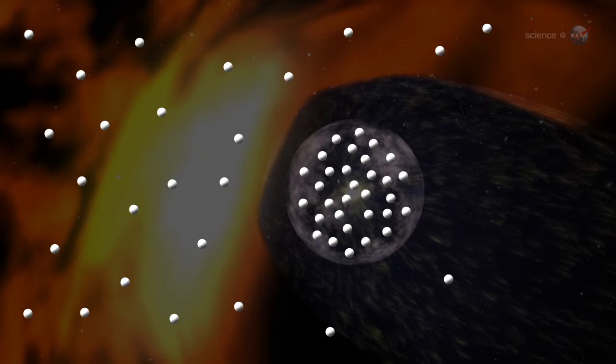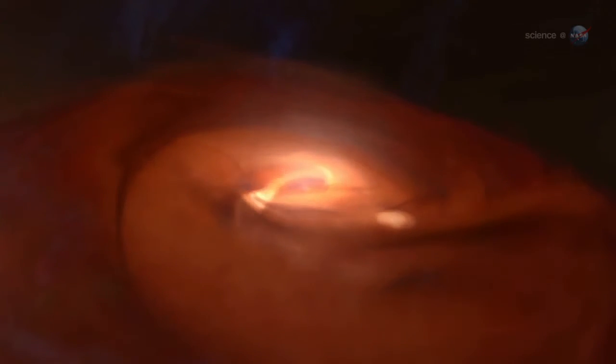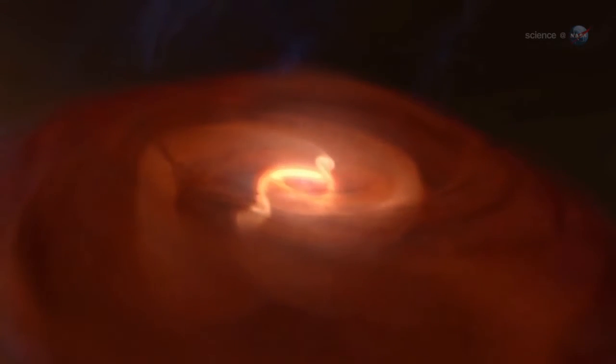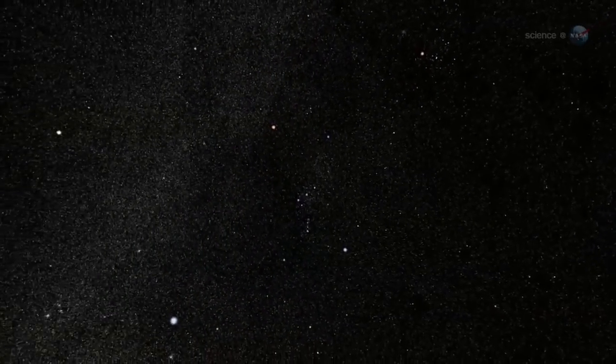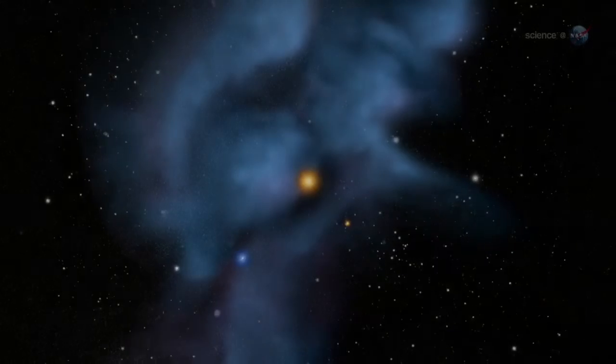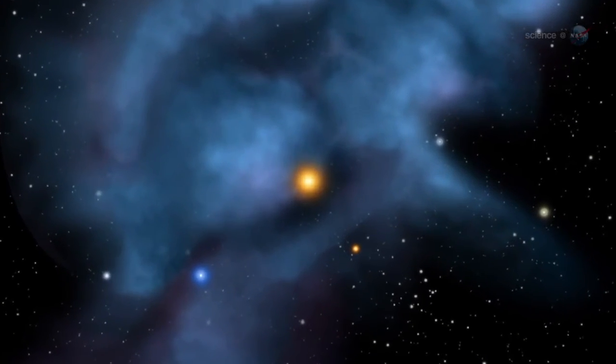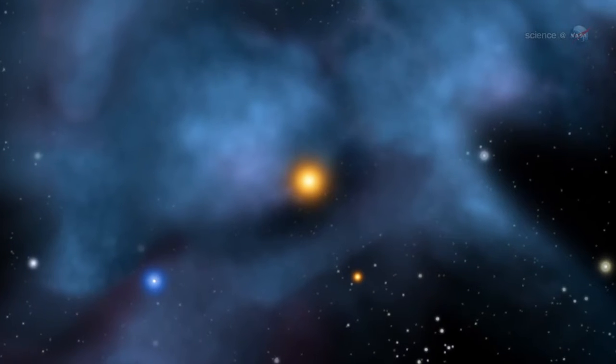Where did the extra oxygen come from? There are at least two possibilities, says McComas. Either the solar system evolved in a separate, more oxygen-rich part of the galaxy than where we currently reside, or a great deal of critical, life-giving oxygen lies trapped in interstellar dust grains or ices, unable to move freely throughout space, and thus undetectable by IBEX. Either way, this affects scientific models of how our solar system and life formed. It's a real puzzle.